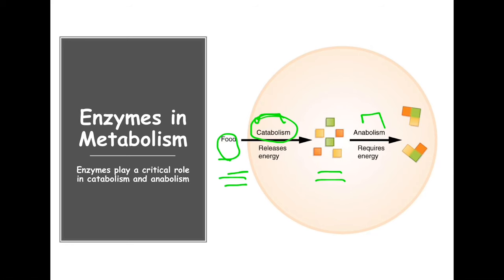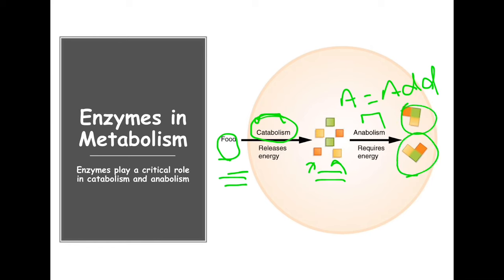Breaking down large molecules or polymers into simpler molecules or monomers — we call that catabolism. On the opposite end, anabolism: think 'A for add.' In anabolism you're taking smaller, simpler molecules and putting them together to make larger molecules, which generally requires energy to be put in.